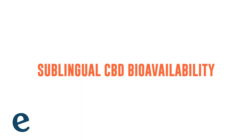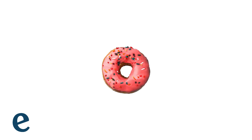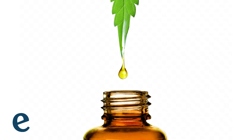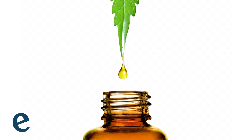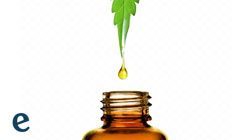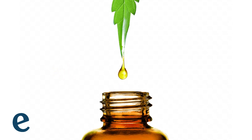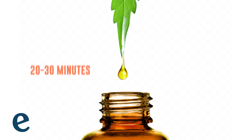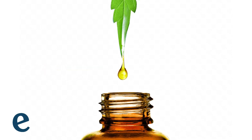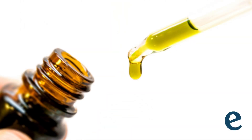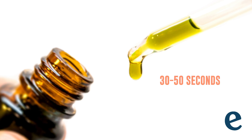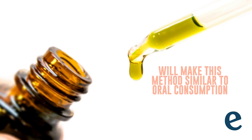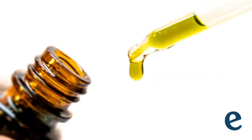The next method is sublingual CBD bioavailability. Since edibles do not have the best bioavailability, many people prefer to use CBD oil or spray. CBD drops or sprays are most effective if you hold the product beneath your tongue. Research suggests that CBD has a bioavailability of between 1% and 19% when absorbed through drops and sprays, though it can be as high as 35%. When you place a drop of CBD oil under your tongue, the CBD enters your bloodstream via the sublingual gland and starts being used by your body within 20 to 30 minutes. For optimal effects, you should hold it for around 30 to 50 seconds — or at least 40 seconds. Placing the drop inappropriately or swallowing the CBD too quickly will make this method similar to oral consumption, resulting in lower bioavailability.